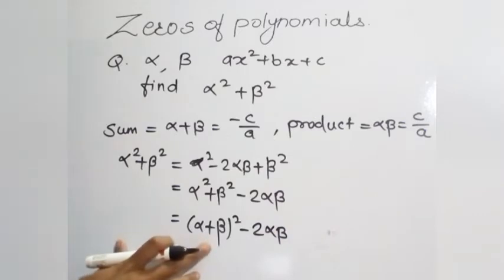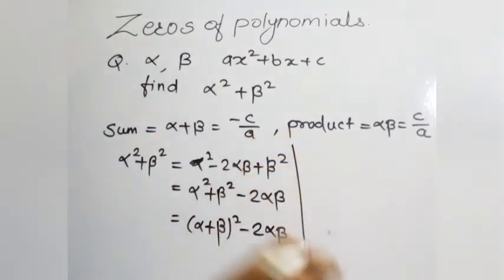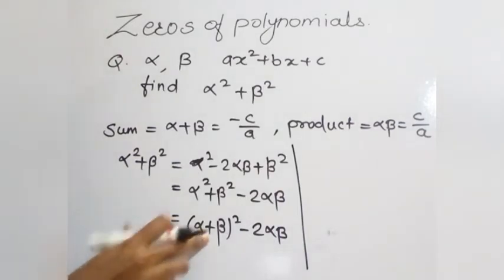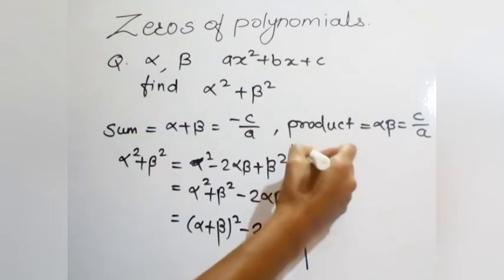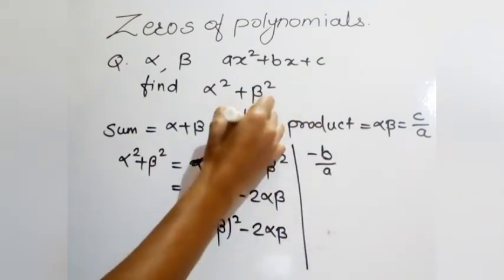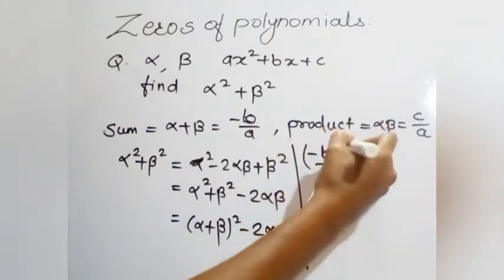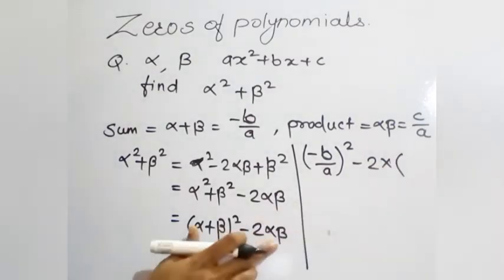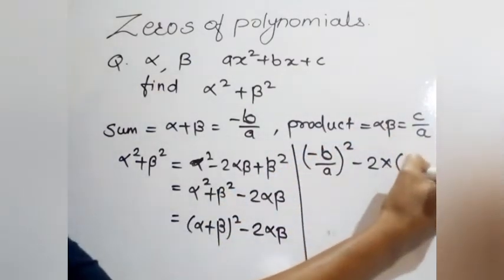Here we have the sum of zeros and the product of zeros. Substituting: sum of zeros is minus b upon a, and product of zeros is c upon a. So we write (minus b upon a)² minus 2 into (c upon a).